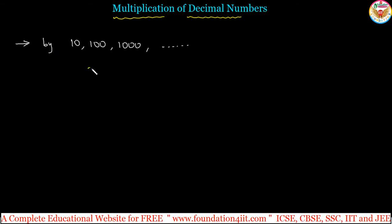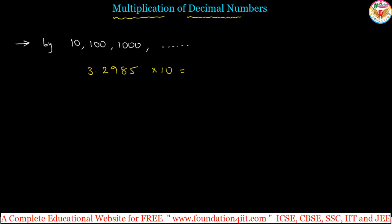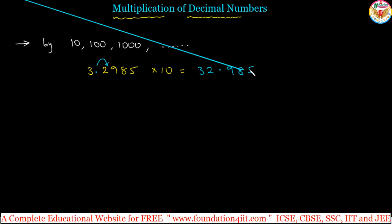For example, take the number 3.2985. When you multiply by 10, the decimal point should move to the right side by one place. We are multiplying by only a single 10, that means one zero — 10 to the power 1. So the answer is the decimal point shifts one place to the right: 32.985.